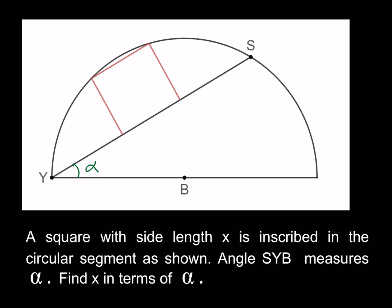Let's go ahead and make some connections. The first connection we're going to make is from the center of the semicircle to one of the vertices of the square. And then we're going to make another connection right through the middle. This is going to be perpendicular — so this is going to be a right angle.